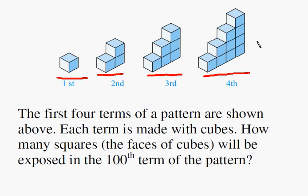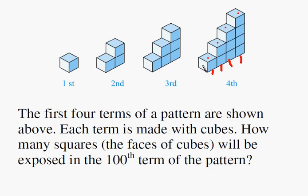However, we are not interested in the number of cubes — we are interested in the number of exposed faces. Let's see what we mean by that. Looking at the fourth term, each visible face on the front, bottom, and sides counts as an exposed face, including those on the back that you can't see. So let's use this concept to find how many exposed faces the hundredth term would have.